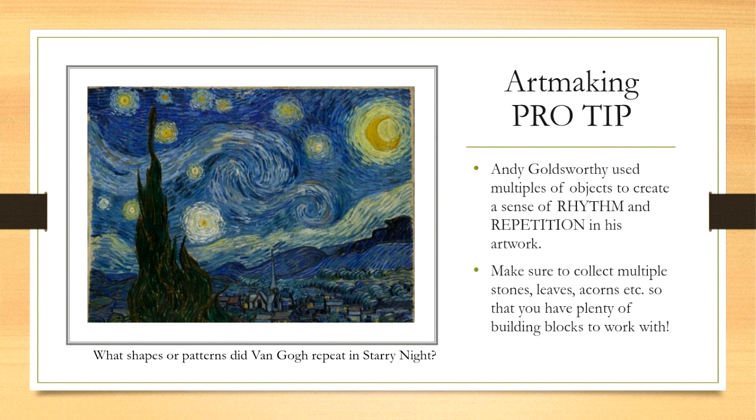Here I'm showing you Van Gogh's famous painting called Starry Night — a great example of an artist using repetition of shapes, colors, and strokes of paint to create rhythm in his artwork.